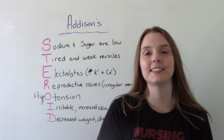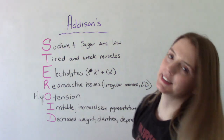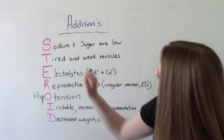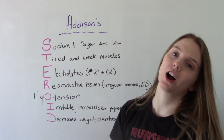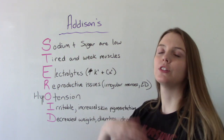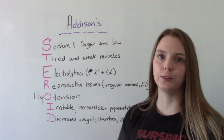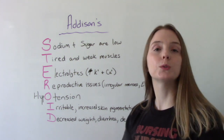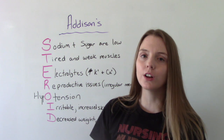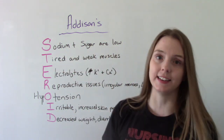When it comes to signs and symptoms, you can remember the mnemonic STEROID. S is for sodium and sugar being low — patients will have low serum sodium and low blood glucose, because decreased cortisol means the body isn't retaining these things properly.